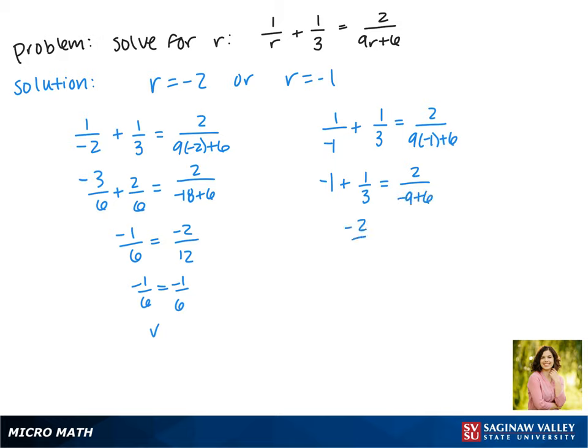Negative 1 is the same as negative 3 thirds, and combining that we get a negative 2 thirds. On the right we also get a negative 2 thirds, so negative 1 is also a solution. So we get r equals negative 2 or r equals negative 1.